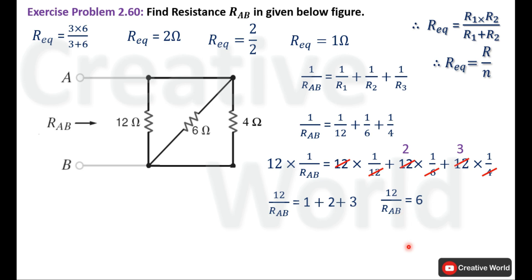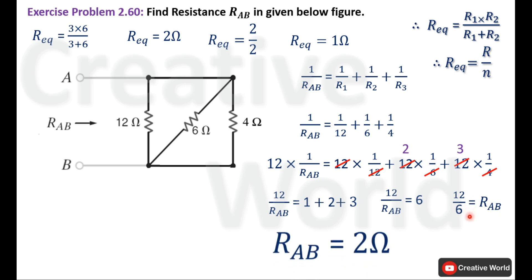Now performing cross multiplication between 6 and RAB, the equation becomes 12 divided by 6 equals RAB. Dividing 12 by 6, the value of RAB equals 2 ohm. So the resistance RAB inside this network is 2 ohm.